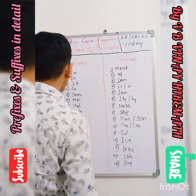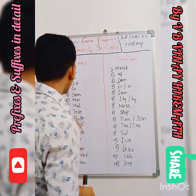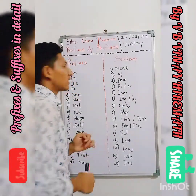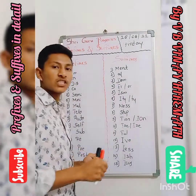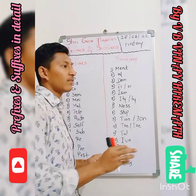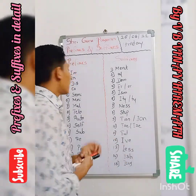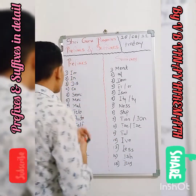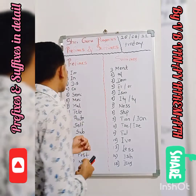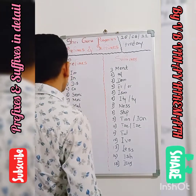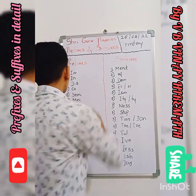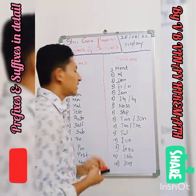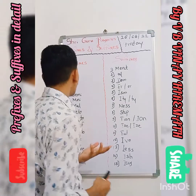The prefix 'Im-': impossible, improper, imperfect. The prefix 'In-': inactive, indifference, incorrect, incomplete. The prefix 'Dis-': disconnect, discharge — and so many others.